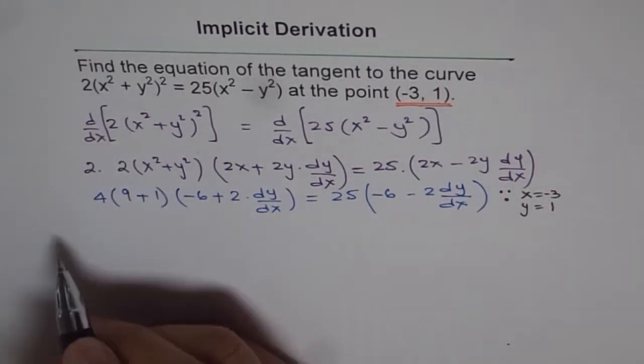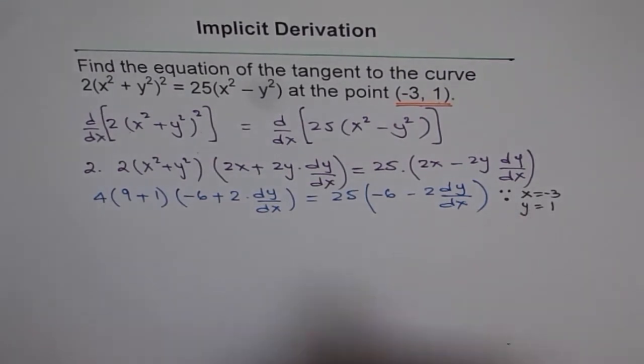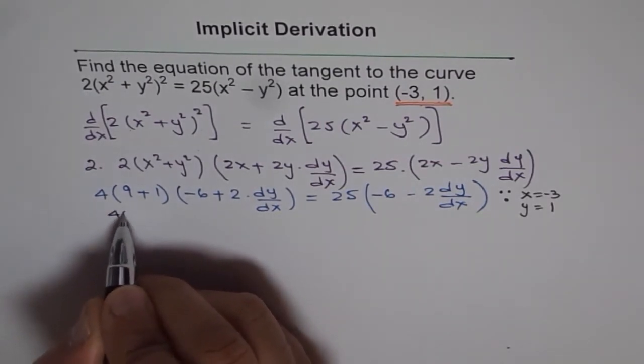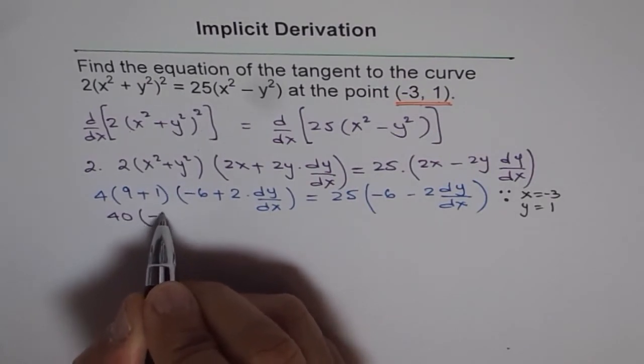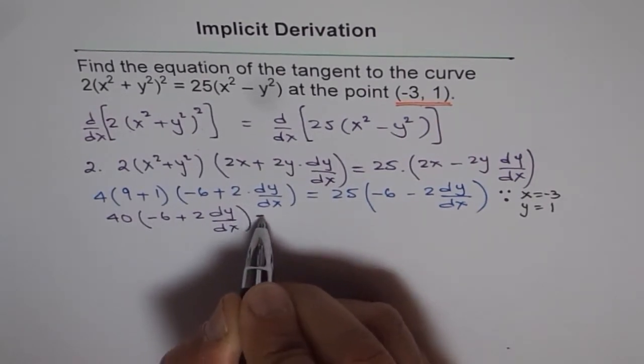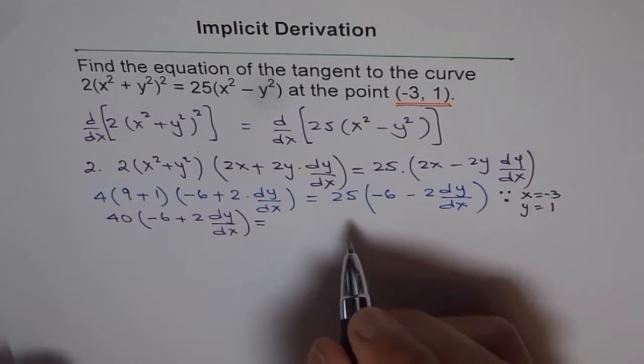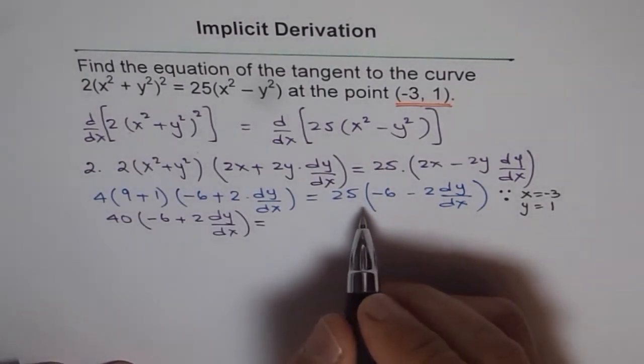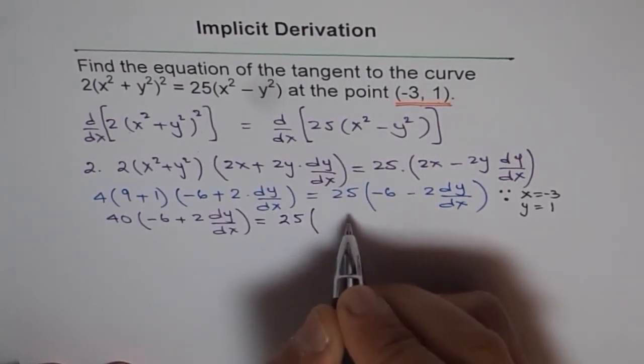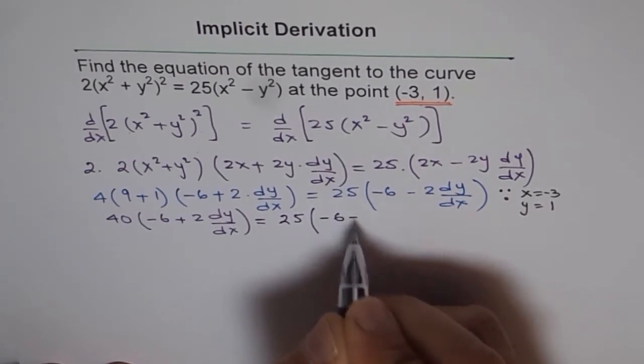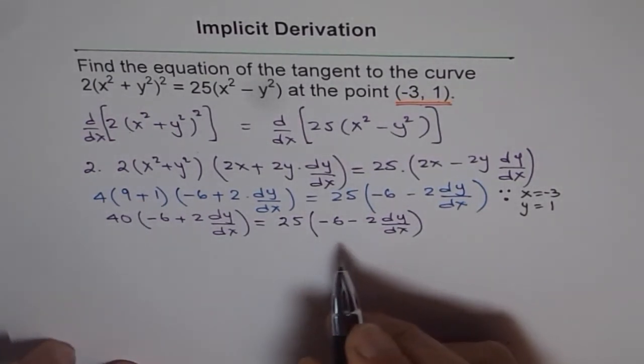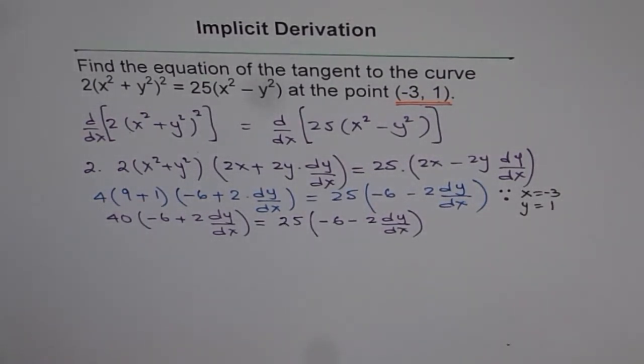This is a critical step I've done in a different ink and explained why. Now here it is: 9 plus 1 is 10 times 4 is 40. So we get here 40 times (-6 + 2 dy/dx) equals to 25 times (-6 - 2 dy/dx). We could actually open the bracket also at this stage.